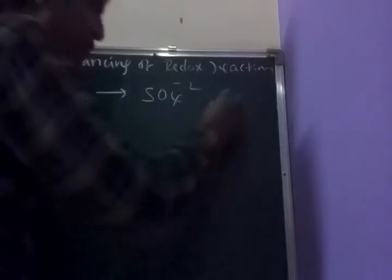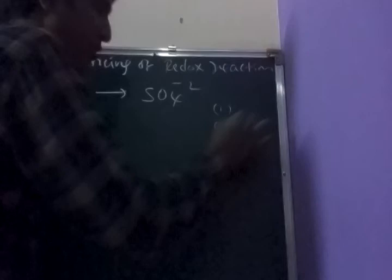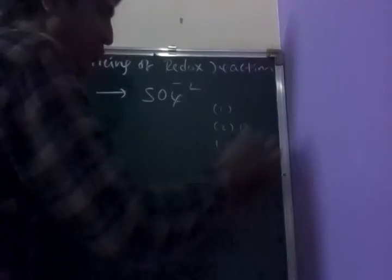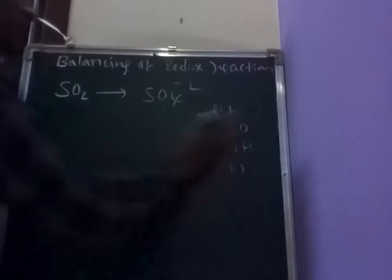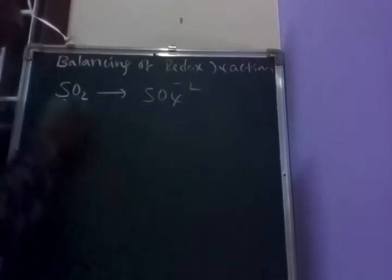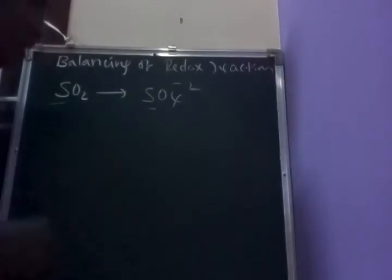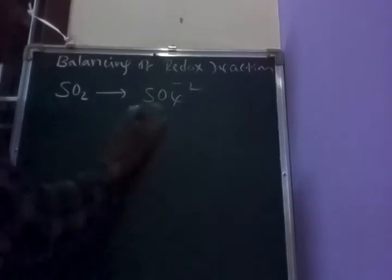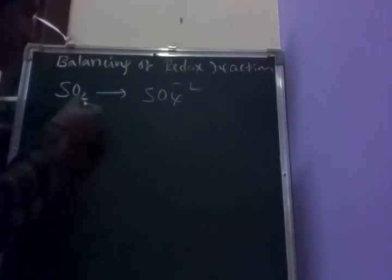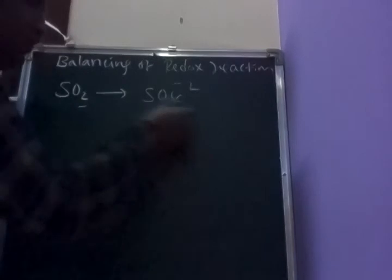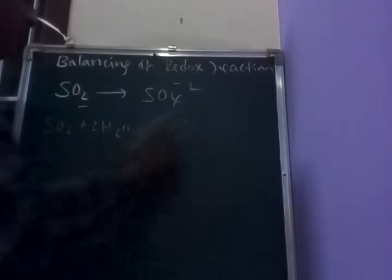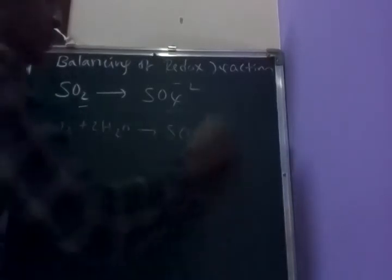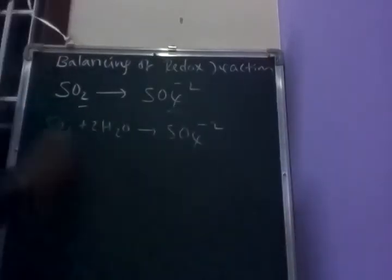To follow the order: first we balance the central atom, second, oxygen or hydrogen, and fourth, charge. Here the central atom is sulfur. One sulfur is present — already balanced. Oxygen atoms are balanced by using water molecules. This side has two oxygens, the other side has four oxygens — the difference is two. So: SO₂ plus 2H₂O gives rise to SO4²⁻. Oxygen is now balanced.